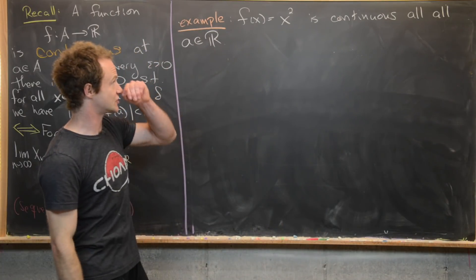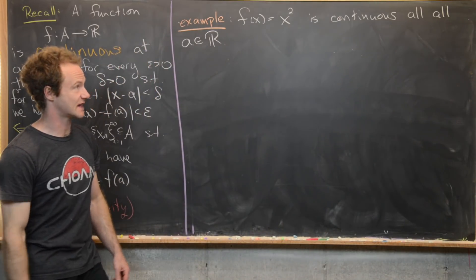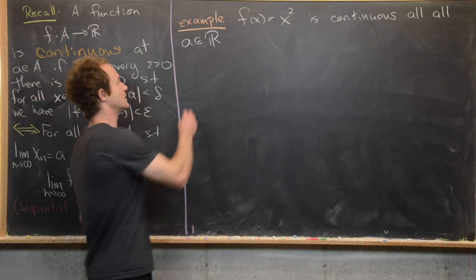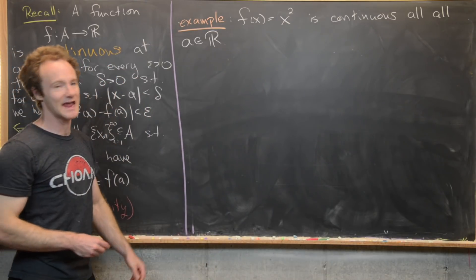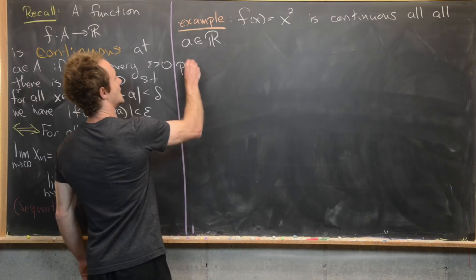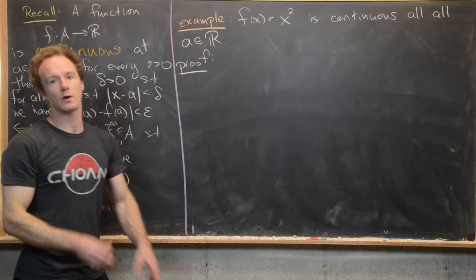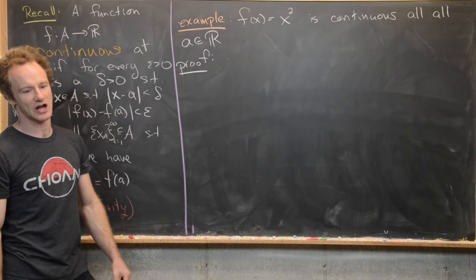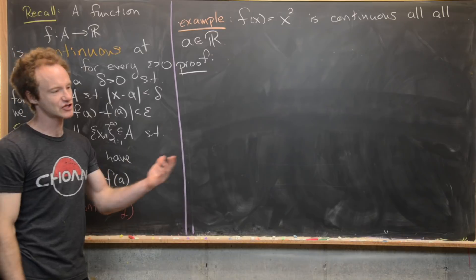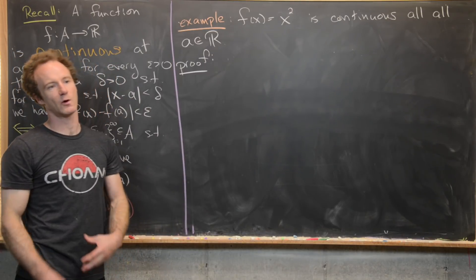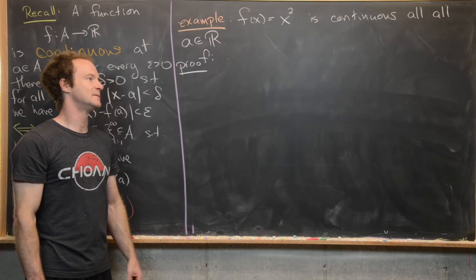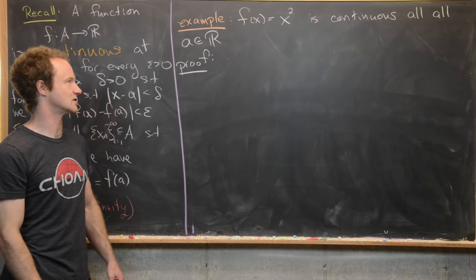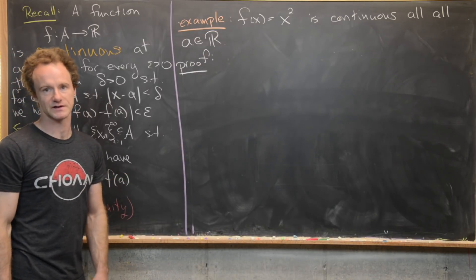First we'll use the epsilon-delta definition to show that f(x) = x² is continuous at all x in ℝ. We think of a as fixed, then run through the challenge of a given ε and find a δ answer. We'll be inspired by the earlier proof that the limit of x² as x approached 5 was 25 — you can look that up to see where our inspiration for this proof comes from.